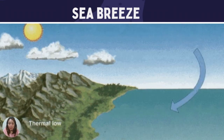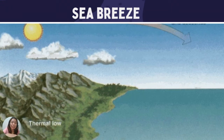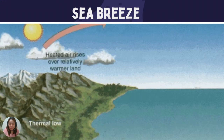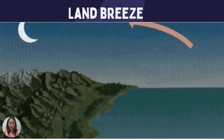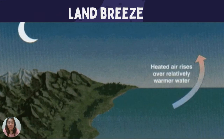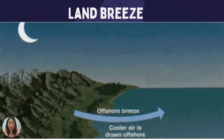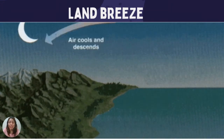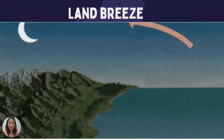The wind that we feel during daytime blowing from the sea to the land is what we call the sea breeze. And what will happen at night when the sun is gone? The land and sea will both cool down, so the temperature will decrease. But the land will lose heat faster than the water in the sea — in other words, the sea will stay warm longer.